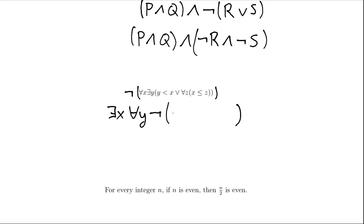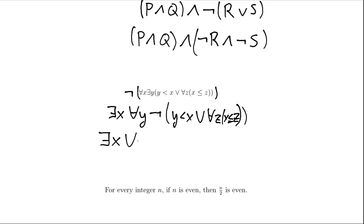So that is everything that was in those parentheses: Y is less than X, or for all Z, X is less than or equal to Z. Now we are taking a negation and passing it over an OR statement — De Morgan's Laws tell us how to do that. We have: there is an X, for all Y — that stays the same. The negation of Y is less than X is Y is greater than or equal to X. The OR becomes an AND.